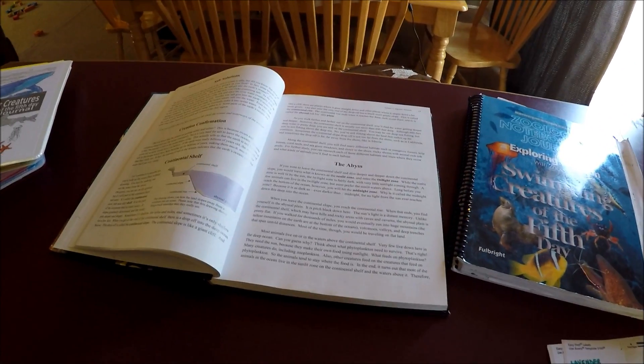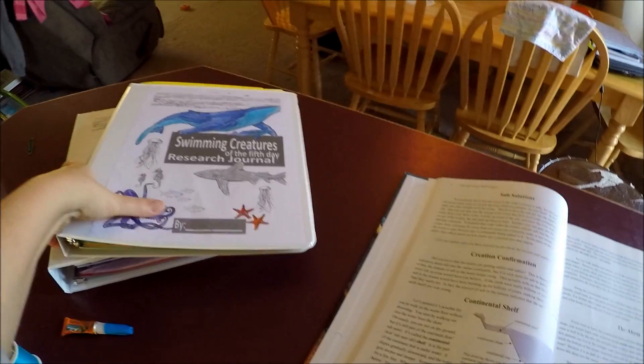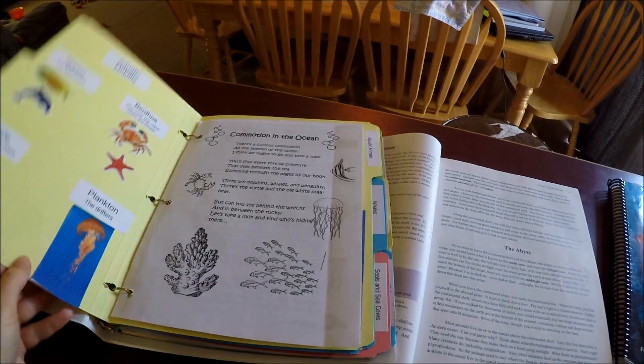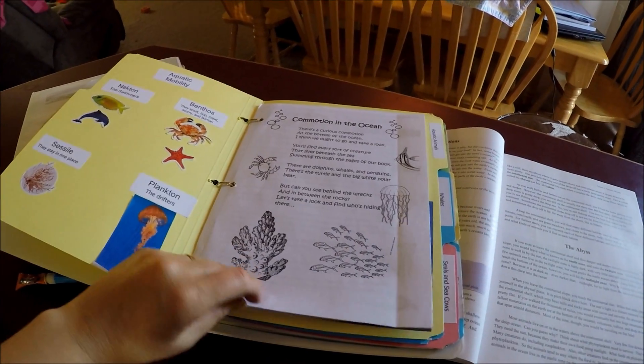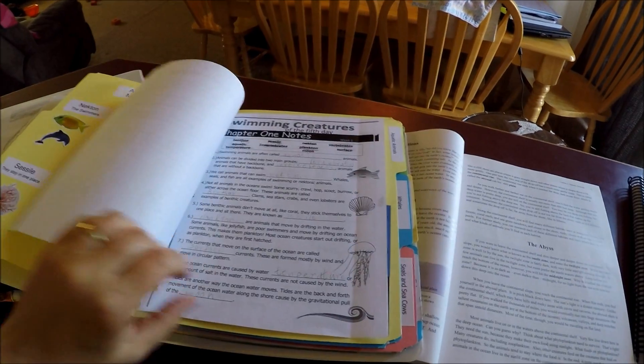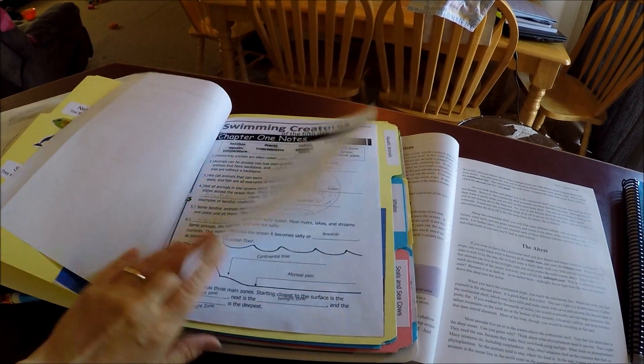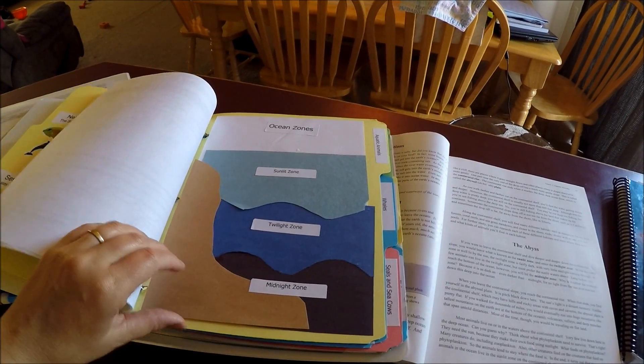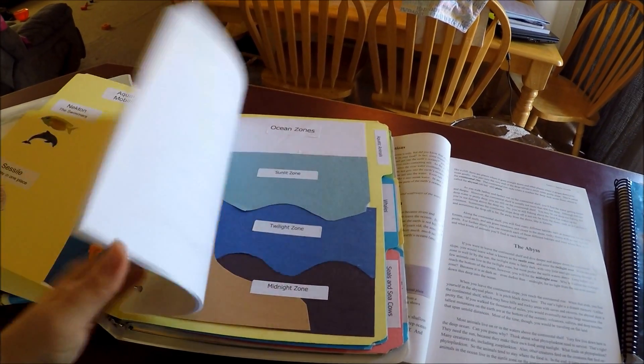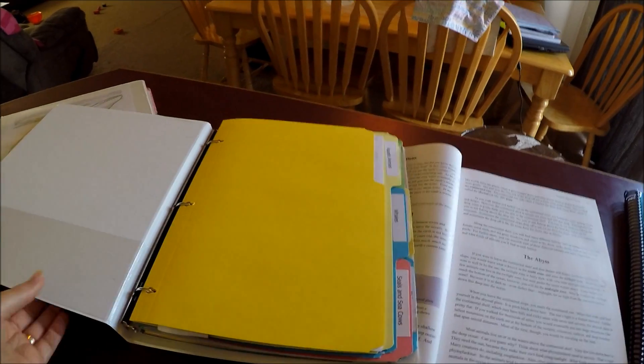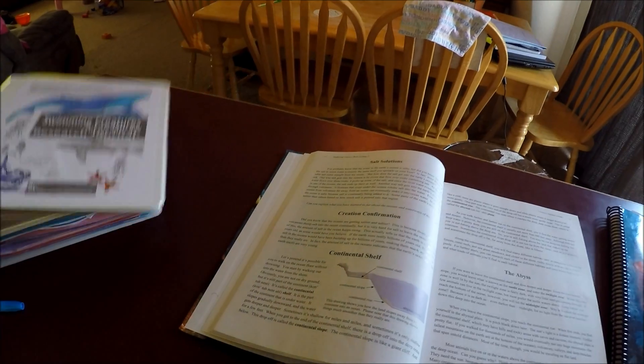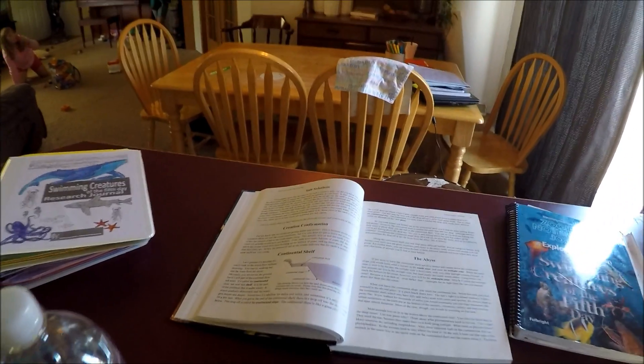In our class we make these research journals and folder activities. If you want to see how we put the folders together for our class, you can check back for other videos on how to put the folders together for each chapter. We do this in a homeschool co-op setting and at home throughout the week. On Fridays we get together as a class and go over our lesson.